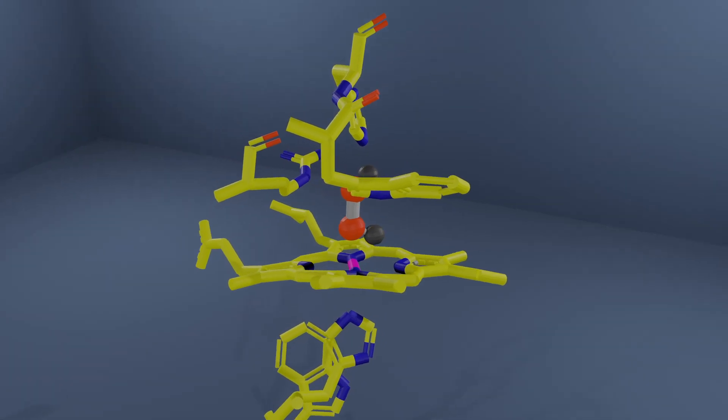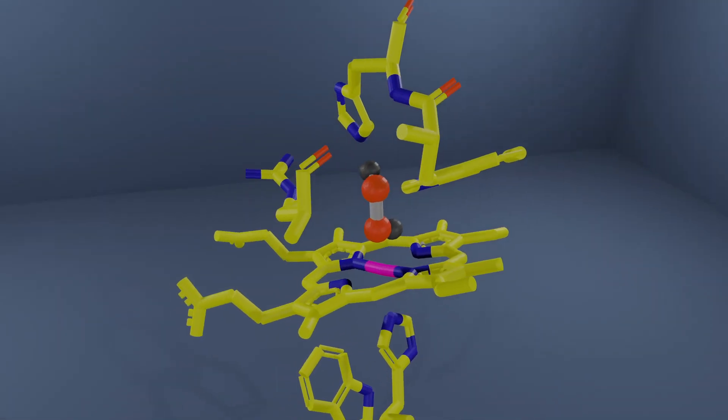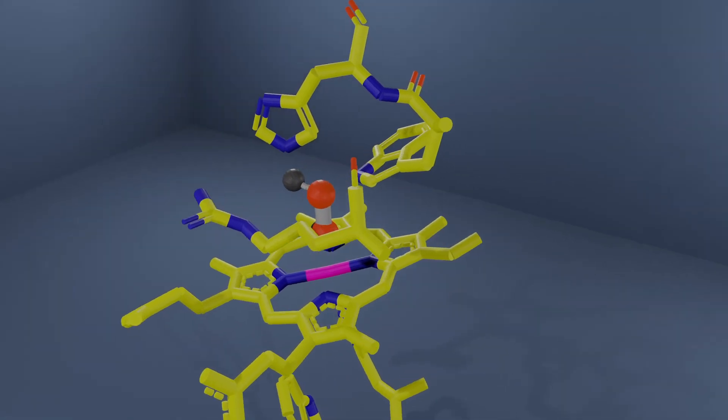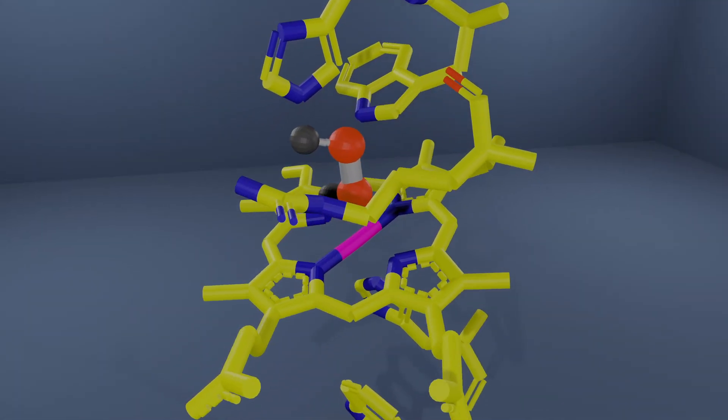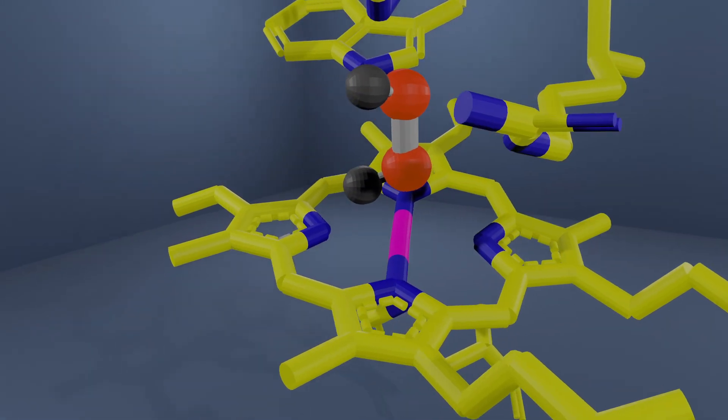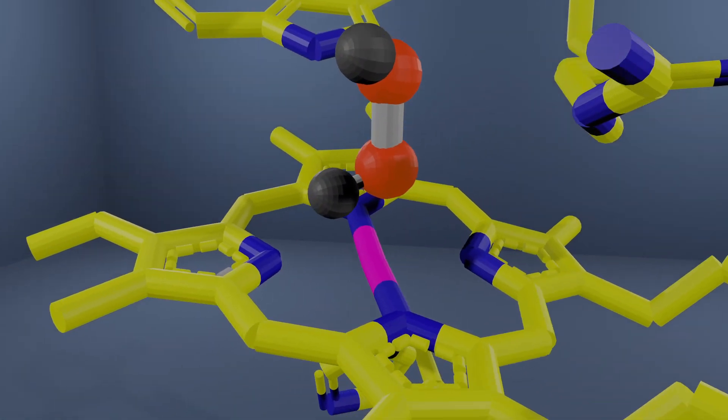The main component in cytochrome c peroxidase is a heme group which serves as the active site. The heme group consists of a porphyrin ring surrounding an iron atom in plus three oxidation state. The interplay between the oxidation states of the iron center is crucial for the activity of CCP peroxidase.